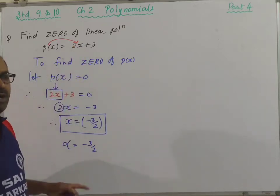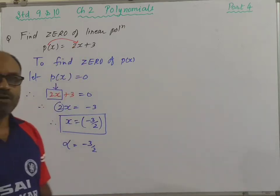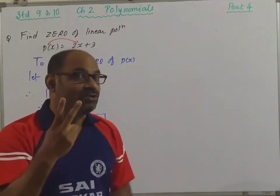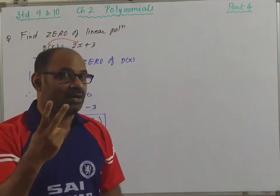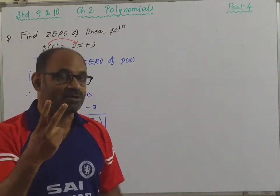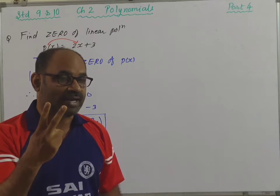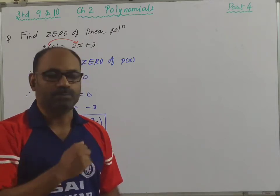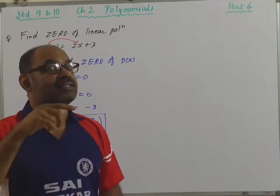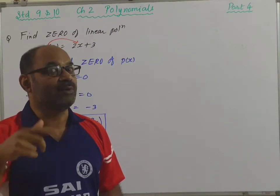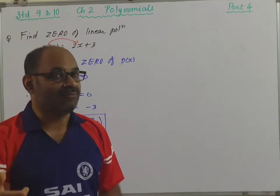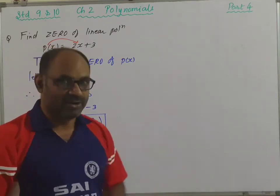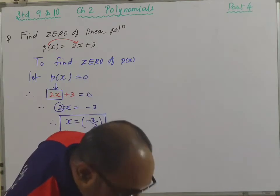For a quadratic polynomial there are at most two zeros — two or less than two. So we say the zeros of a quadratic polynomial are alpha and beta. Next we are going to see that.